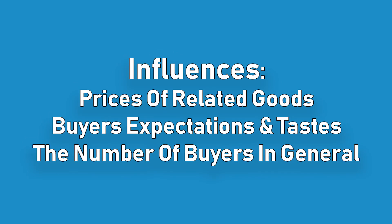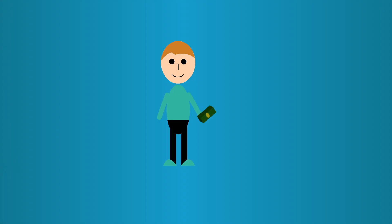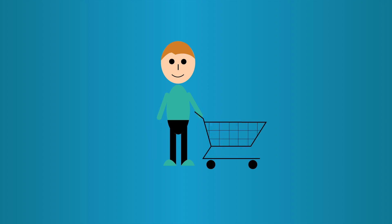There are influences other than price that play a role in the balance of the market, such as prices of related goods, buyers' expectations and tastes, and the number of buyers in general. On the demand side, income can play a significant role. As income rises, people will buy more goods or even begin to purchase more expensive, higher quality goods.